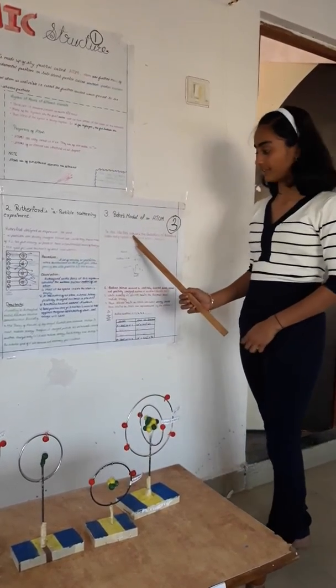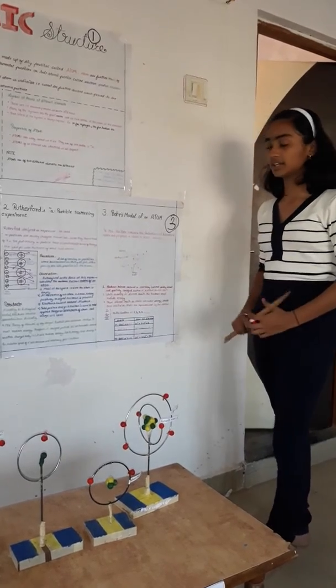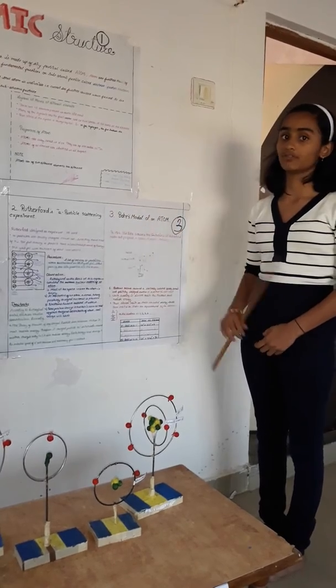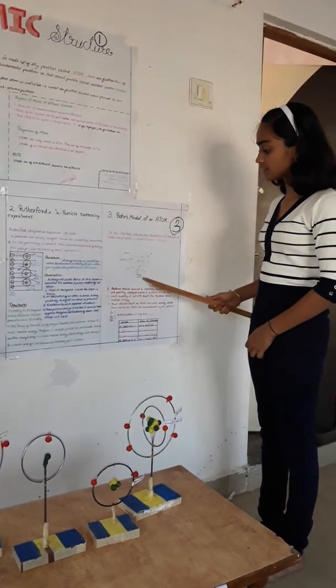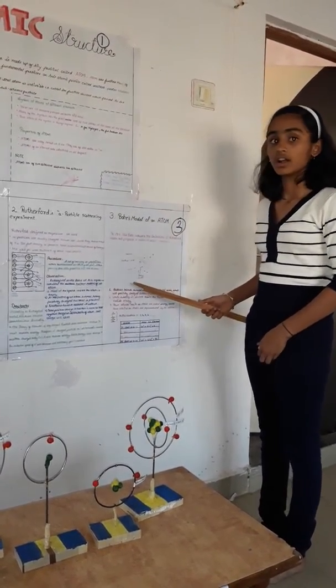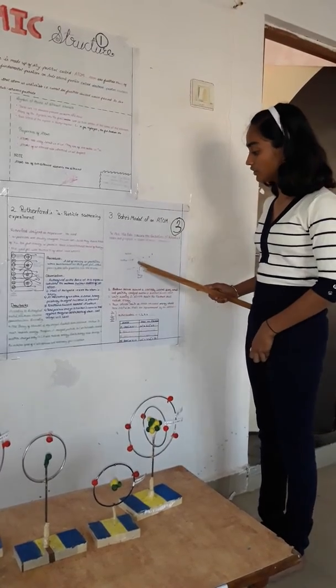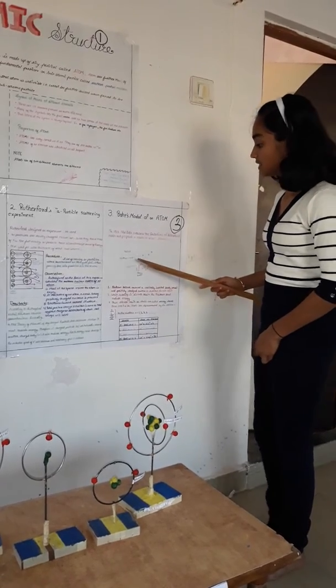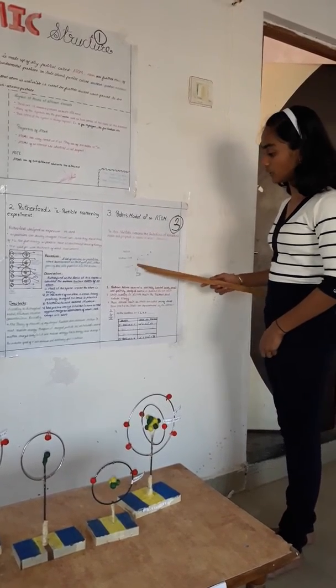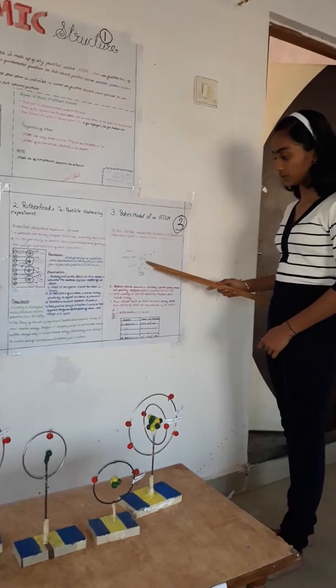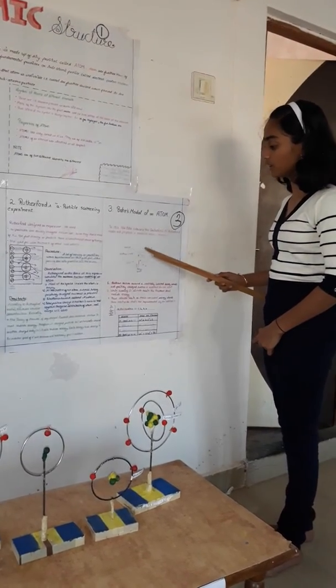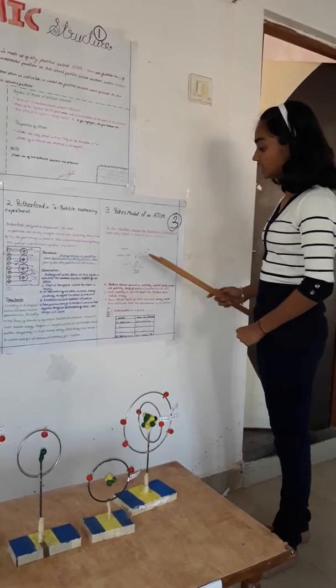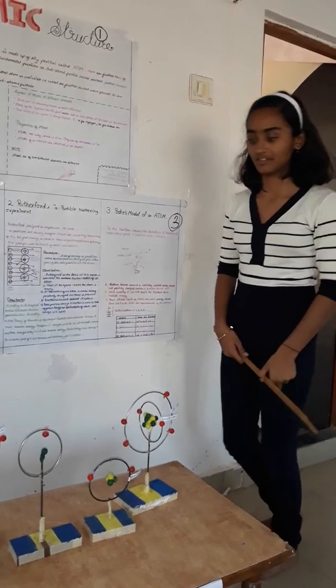Now Bohr's model of atom. In 1913, Niels Bohr overcame the limitations of Rutherford's model and proposed a model of atomic structure. This is the diagram he showed. These black balls are electrons. Electrons revolve around the heavy body called nucleus in orbits also known as energy levels. These discrete orbits or shells are known as energy levels.